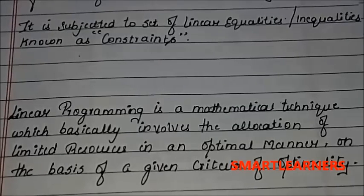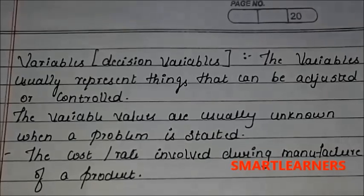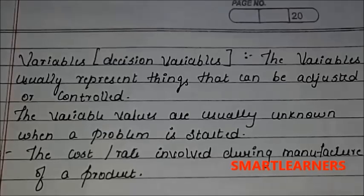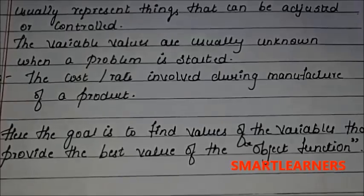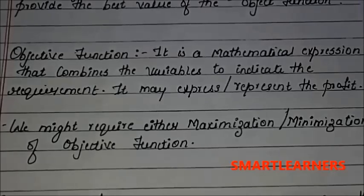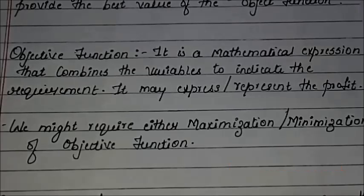The first term we should understand is variables, also called decision variables. These variables usually represent things that can be adjusted or controlled. The variable values are usually unknown when a problem is started — for example, the cost or rate involved during manufacturing of a product is literally unknown. Our goal is to find the value of the variables that provide the best value to the objective function. The objective function is a mathematical expression that combines the variables to indicate the requirement — it may represent the profit in some cases.